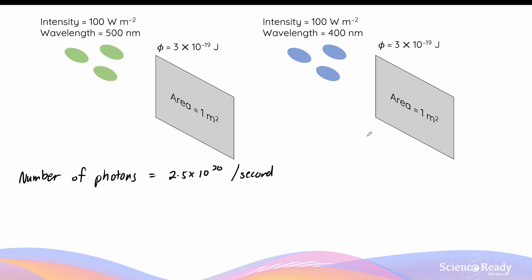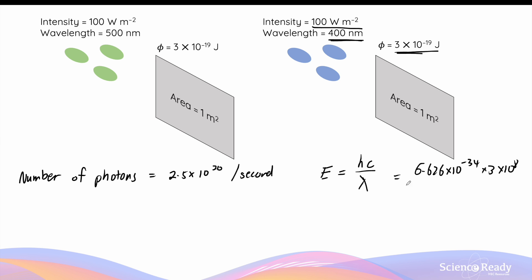Now let's look at a slightly different scenario. If I change the light source to a shorter wavelength of 400 nanometers but keep the intensity constant, using the same metal with the same 1 meter squared area and the same work function, you might think that if I keep the intensity the same and only change the wavelength, the number of photons would also remain the same. Actually, that's not the case. Since the wavelength of the photons has changed, we would expect the energy of each photon to also change.